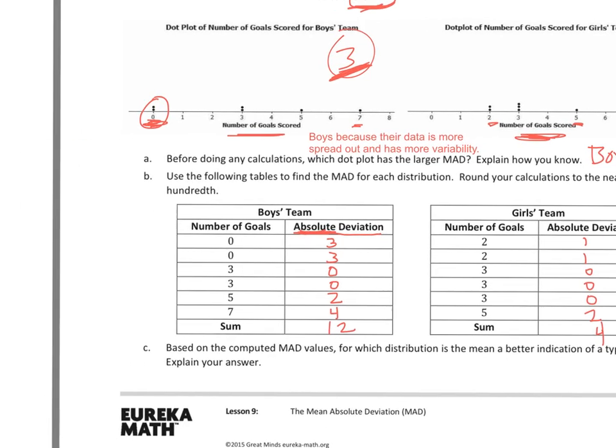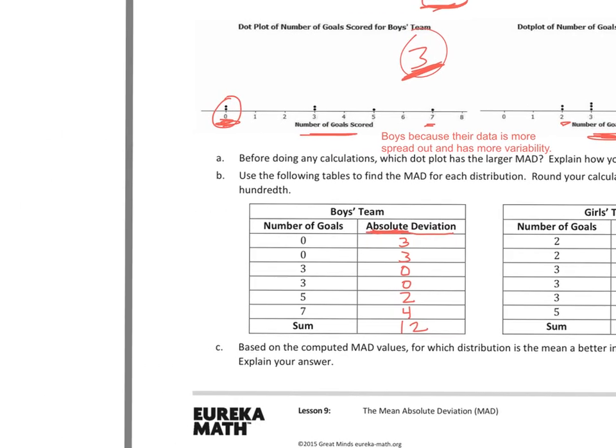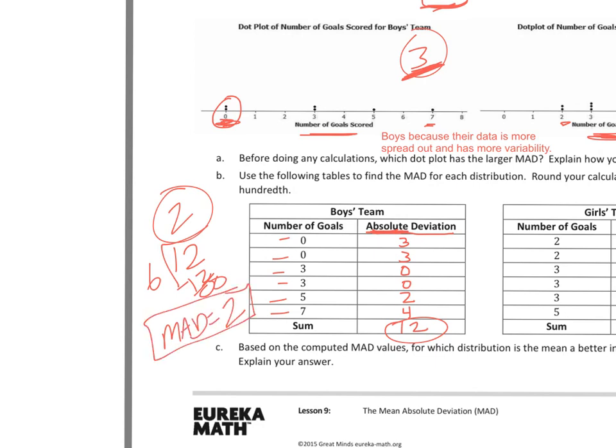So, what I'm going to do now is I'm going to take the sum of the absolute deviation, and then I divide it by the number of data points. So, I have 1, 2, 3, 4, 5, 6. And I see that my answer is 2. So, my mean absolute deviation is 2 for the boys.